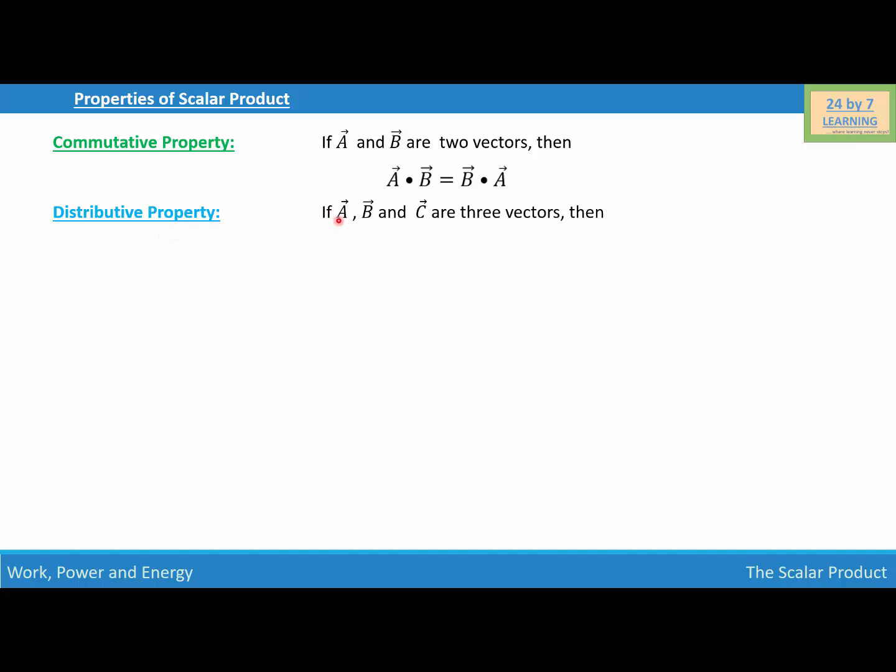Distributive property. If vector A, vector B, and vector C are three vectors, then vector A dot (vector B plus vector C) is equal to vector A dot vector B plus vector A dot vector C.